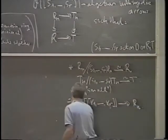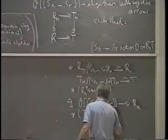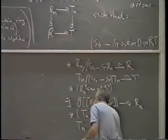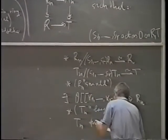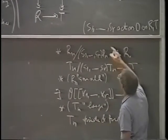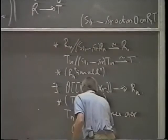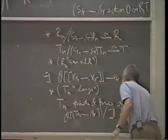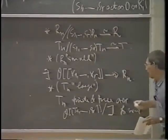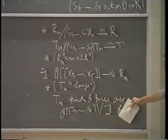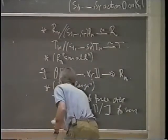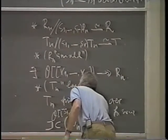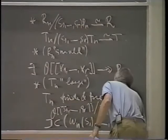The third condition says that in some sense the T_n's are large. The O-algebra T_n is finite and free over that algebra there, modulo J, where J is some small ideal — finite and free over this ring — for some ideal J of this ring contained in the ideal generated by omega_N(S_1),...,omega_N(S_R).